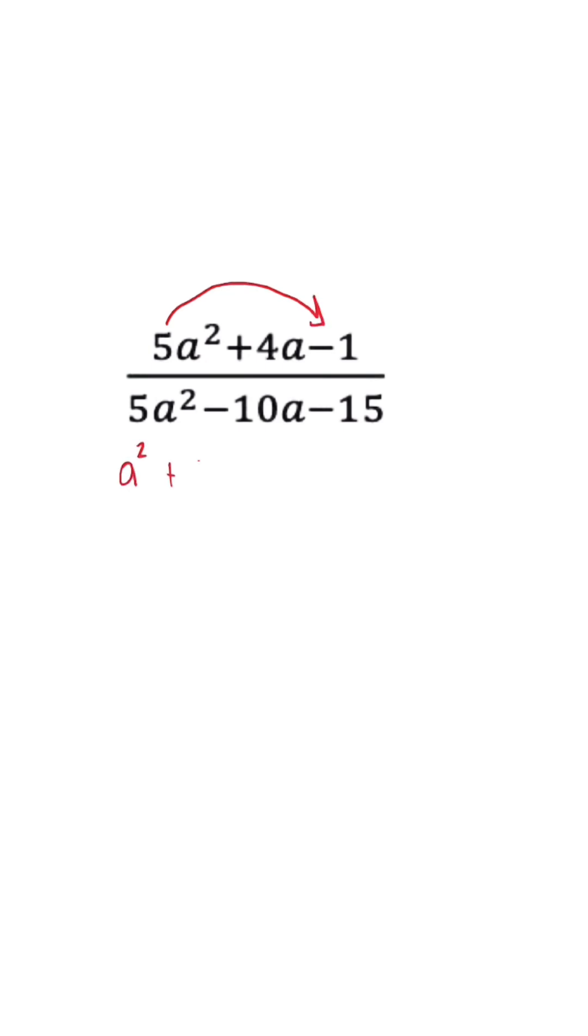Once we use the AC method, this is what the trinomial is going to be so that we can factor it more easily. So this breaks down to (a+5) times (a-1).